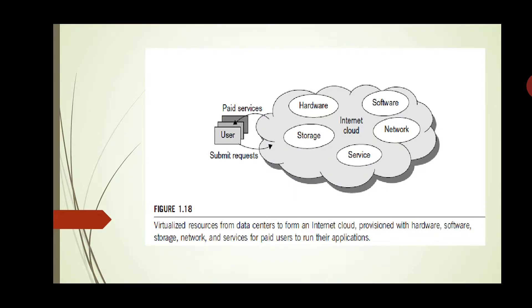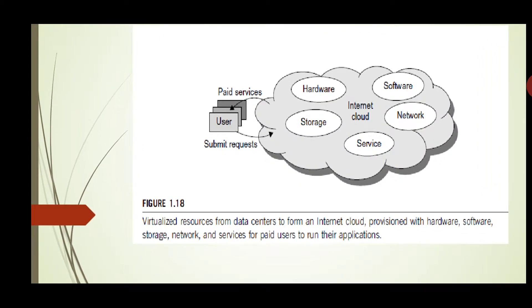Now we see what the internet cloud exactly does. The figure shows the virtualized resources from data centers to form an internet cloud, provisioned with hardware, software, storage, network, and services for paid users to run their applications. Users submit requests and the cloud provides paid services. We are using tablets, laptops, and mobile phones — these electronic devices are used to access the cloud over the internet.